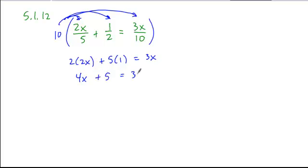4x plus 5 equals 3x. Subtract a 3x from both sides and move your constants over, leaves you x is equal to negative 5 is your solution.